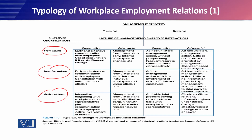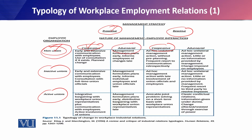Looking across the horizontal axis, first we see non-union, cooperative, and proactive approach. Then non-union, cooperative, and reactive approach. Similarly, non-union, adversarial, and proactive approach; and non-union, adversarial, and reactive approach. So the model combines the union status (non-union), the relationship style (cooperative or adversarial), and the management stance (proactive or reactive).